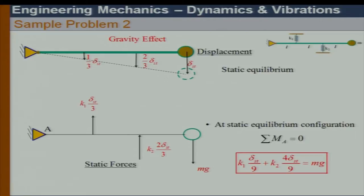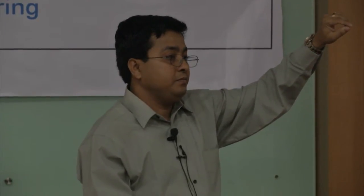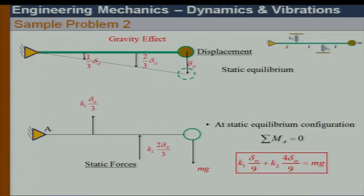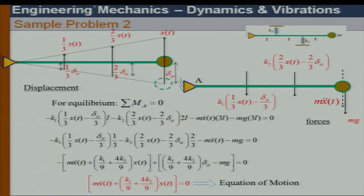From the static equilibrium configuration, I oscillate the system. Measuring motion from the static equilibrium, what I want to prove is that if the body oscillates about the static equilibrium configuration, gravity will not enter the equation of motion.